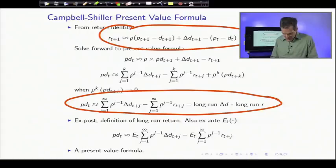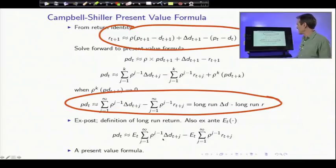Anything that holds ex post, again, also holds ex ante. So price dividend ratio is expected dividend growth and expected return. And we have a present value formula.